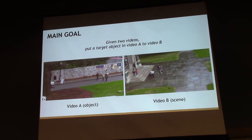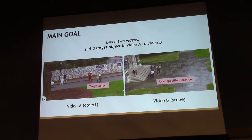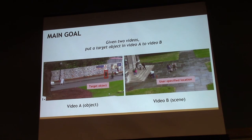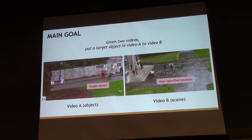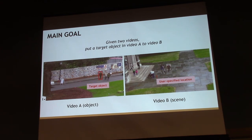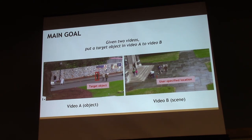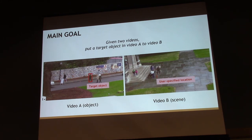So here's the main goal. We have two videos and we want to insert an object from video A into video B. We define the object using a bounding box — since per-frame segmentation is too expensive. Once we have the bounding box, a user can select it, pick the person, and drag and drop them into the other scene. But the naive result is not realistic, so our goal is to make it more realistic.